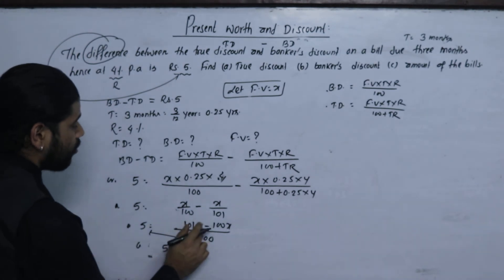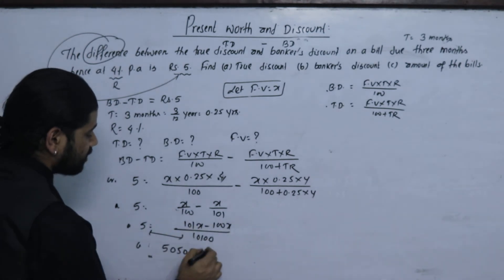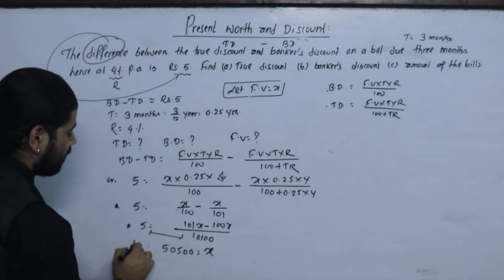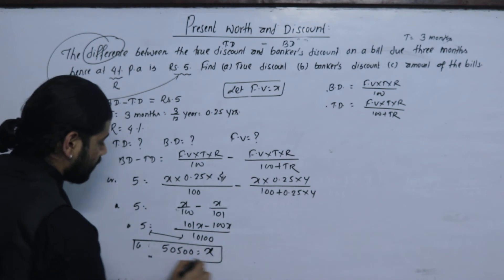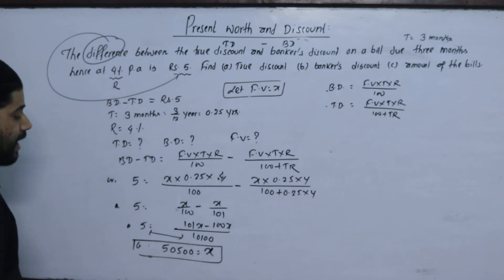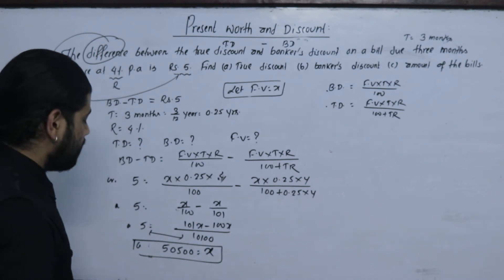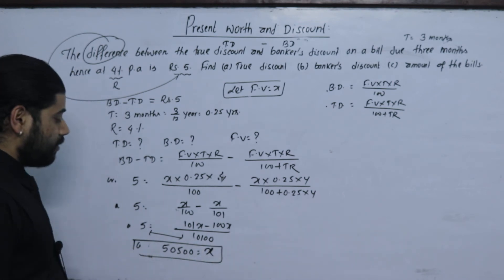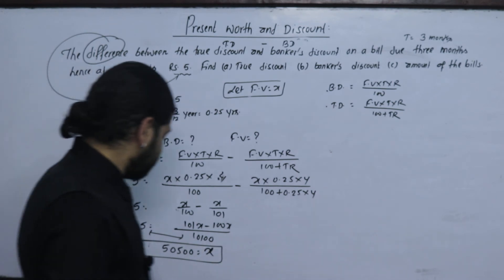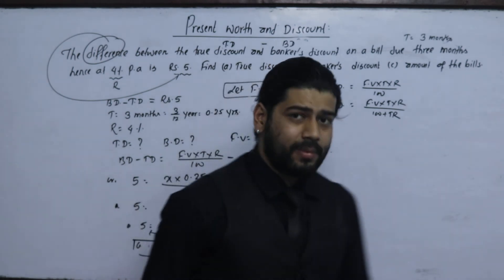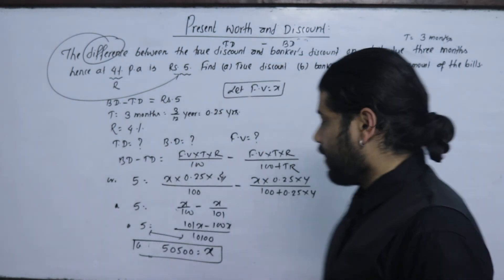After cross multiplication, 101x minus 100x equals x. So 5 into 1100 equals x. Therefore, x is equal to 5500.